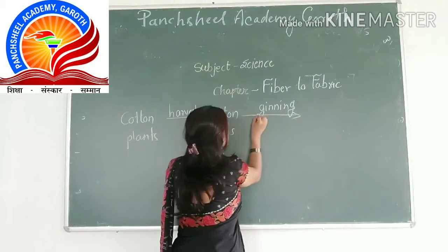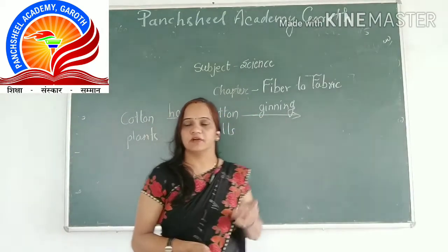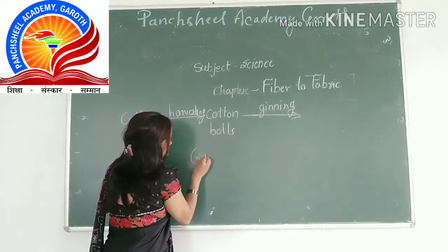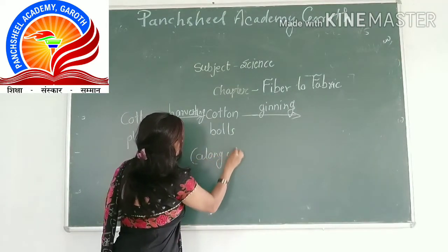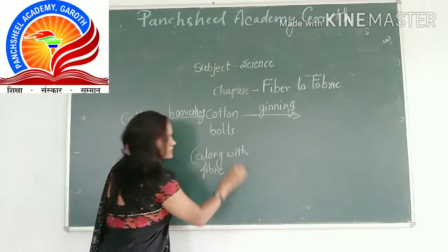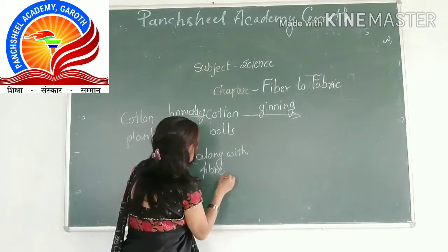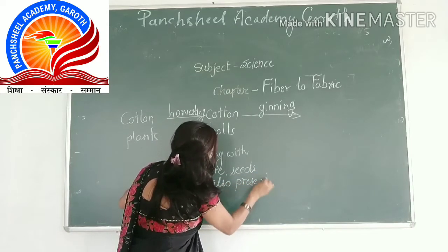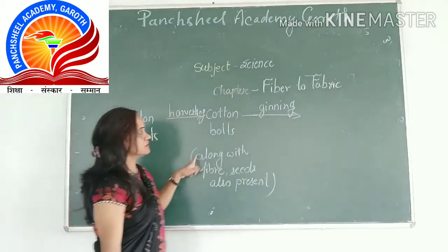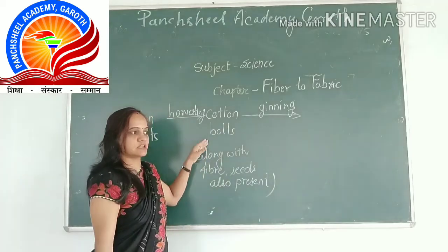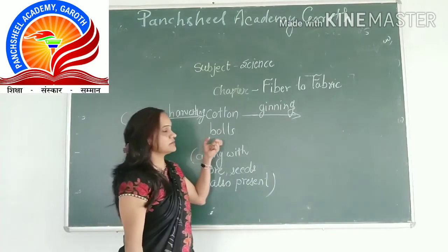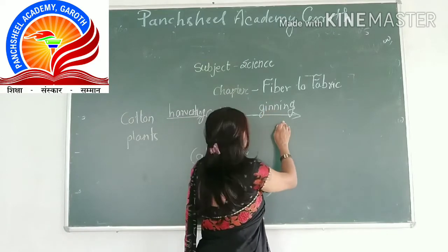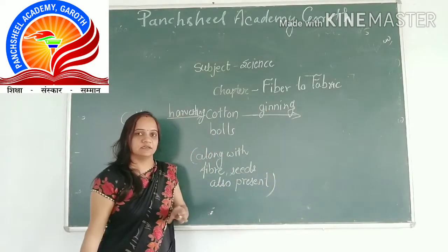Ginning is the process of separation of cotton fibers from their seeds. In cotton balls, seeds are also present along with the fiber. These cotton balls are then sent to the ginning industry. In ginning, the separation of fiber from their seeds takes place.